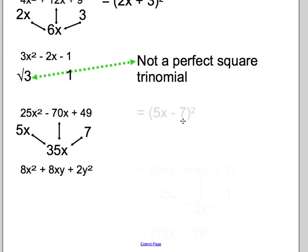So our resulting binomial is (5x - 7)². That minus sign is there because that minus sign is there. The last example I'd like to show you is to convince you that you need to look at it.